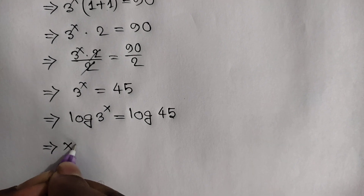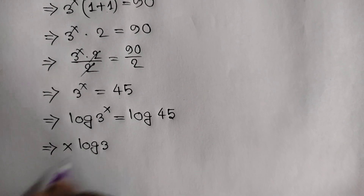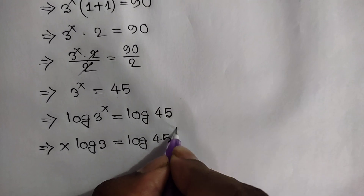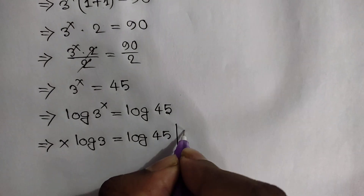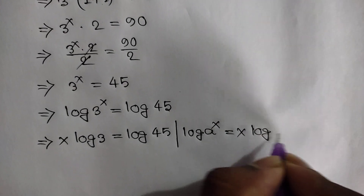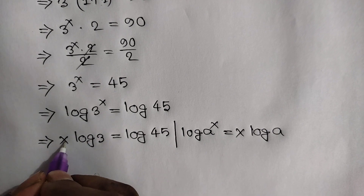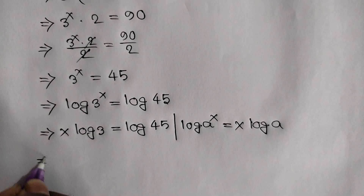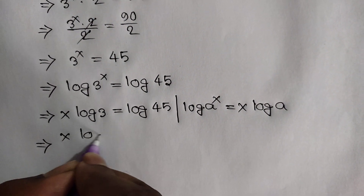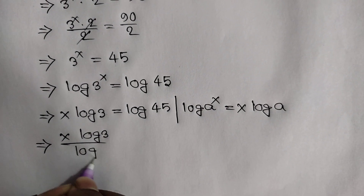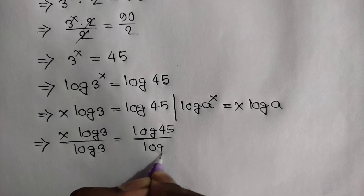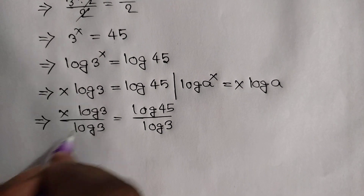According to the formula log of a to the power x is equal to x log of a, applying this rule here we can write x log of 3 is equal to log of 45. Now dividing by log of 3 on both sides, we get x log of 3 over log of 3 is equal to log of 45 over log of 3. This log of 3 cancels out this log of 3.